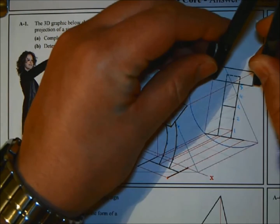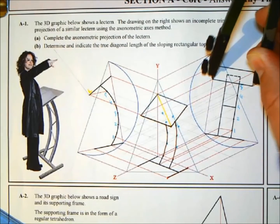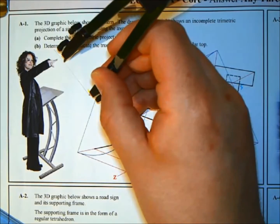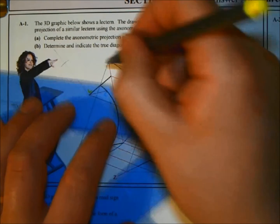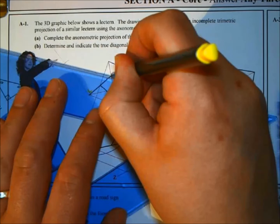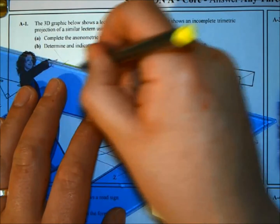I mark that out that side. The true length of the diagonal will now be the diagonal from the top right hand corner here to the bottom left hand corner. That's your true length.